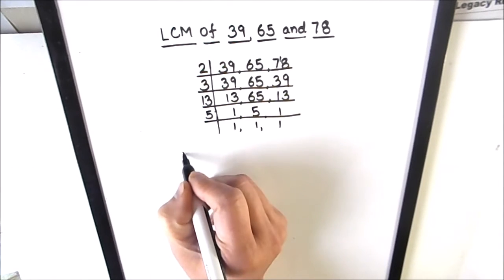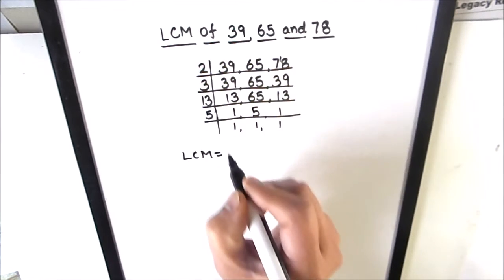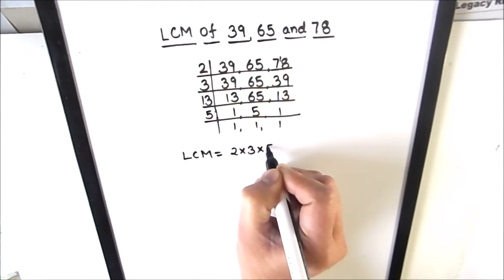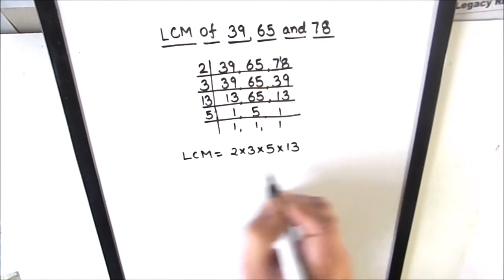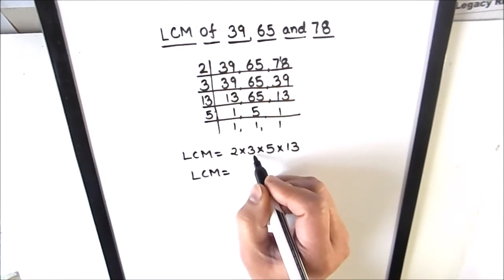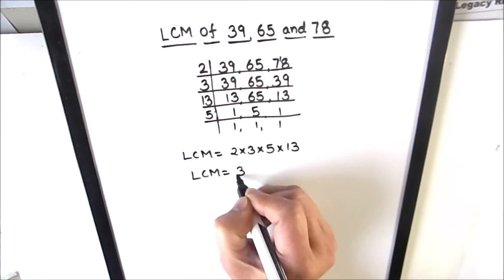To find the LCM of the three numbers, we are going to take the product of all the numbers which are on the left hand side of the ladder. So 2 times 3 times 5 times 13 is the LCM of the 3 numbers. So LCM is 2 times 3 is 6, 6 times 5 is 30, and 30 times 13 is 390.